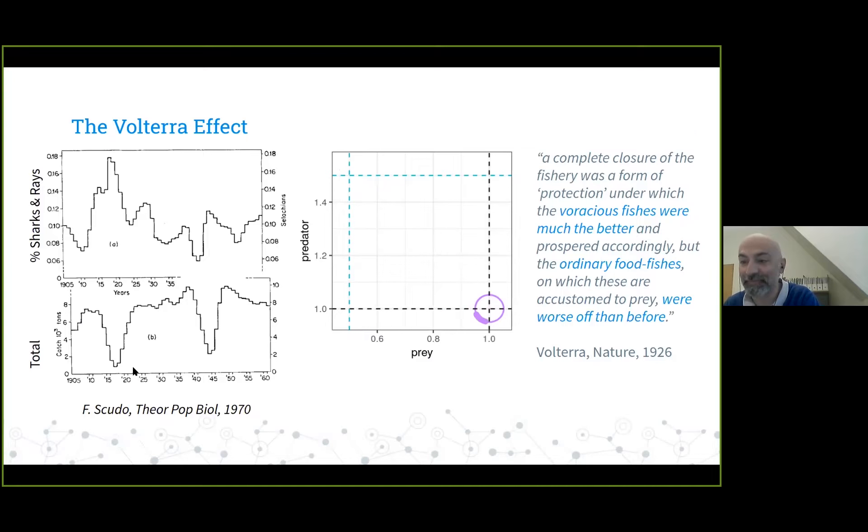These equations do exactly what you would expect. This is the type of data Umberto was looking at. This is the total catch in the market of Trieste. During the years of the war, the quantity of catch decreased dramatically. But in the same years, the amount of shark and rays, which are higher up predators in this food chain, increased in proportion quite dramatically. If you take your equations and simulate this closure of the fisheries, these trajectories move up and to the left, meaning the prey have a lower equilibrium and the predator a higher equilibrium. As Volterra put it, a complete closure of the fishery was a form of protection under which the voracious species prospered accordingly, but the ordinary food fishes of which these are accustomed to prey were worse off than before.